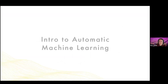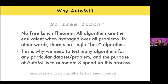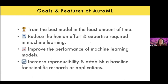So, intro to automatic machine learning. Why would we do AutoML? There's something called the No Free Lunch theorem, which states that all algorithms are equivalent when averaged over all problems — meaning there is no single best algorithm. It's always dependent on your dataset and what you're trying to measure. That's why we want AutoML: it's a process by which we automatically scan and test a bunch of different algorithms to find the best model for a particular dataset.